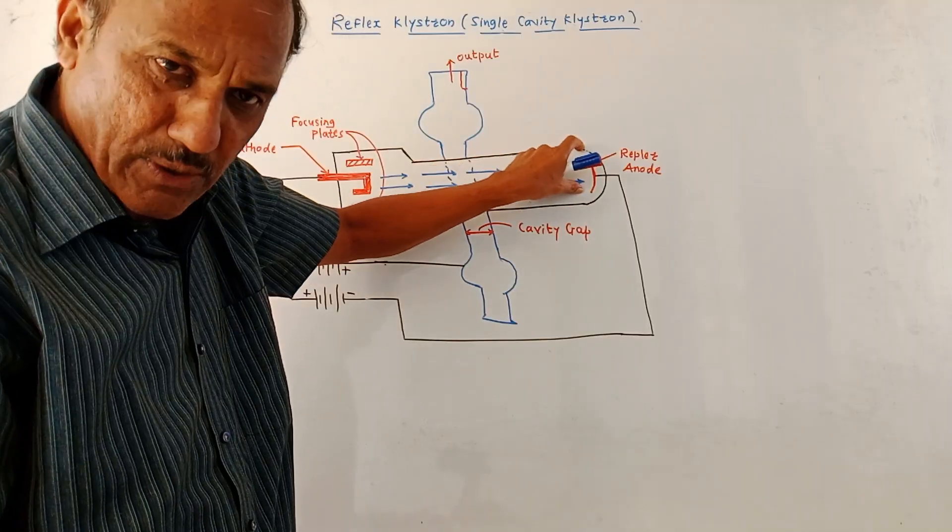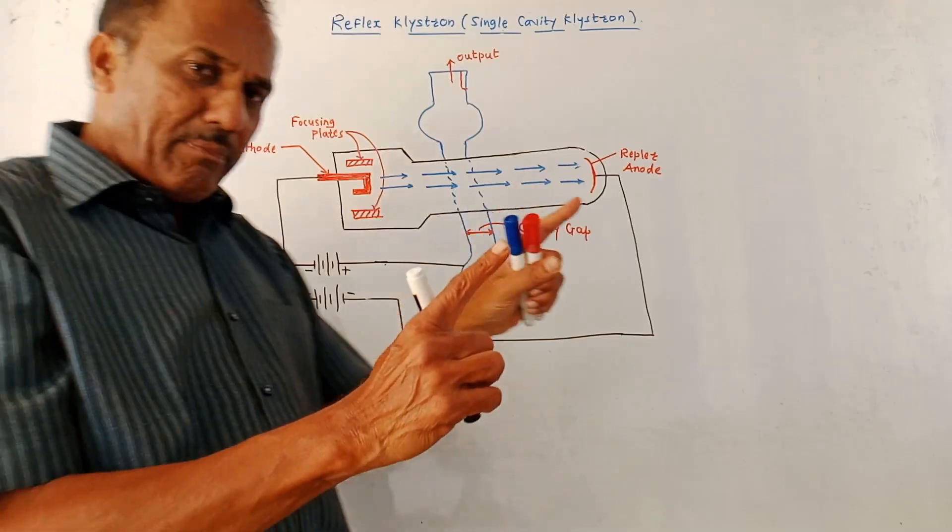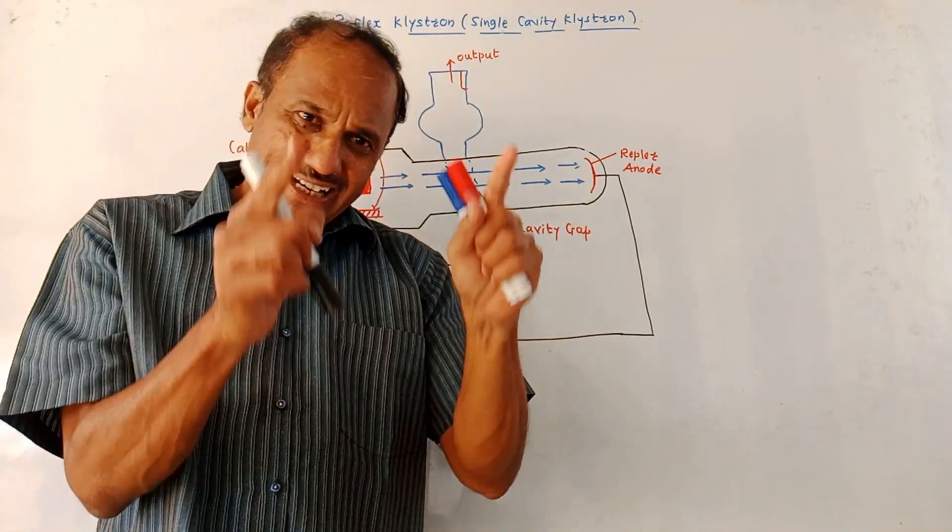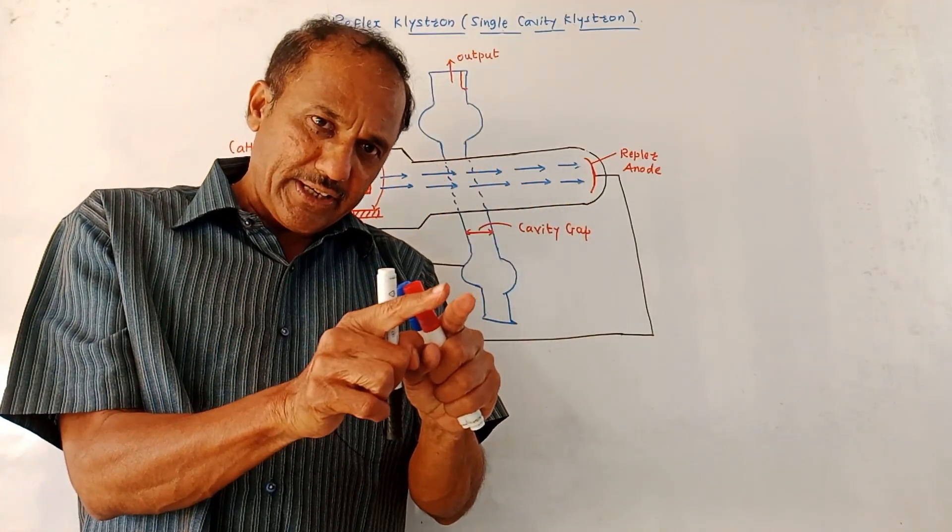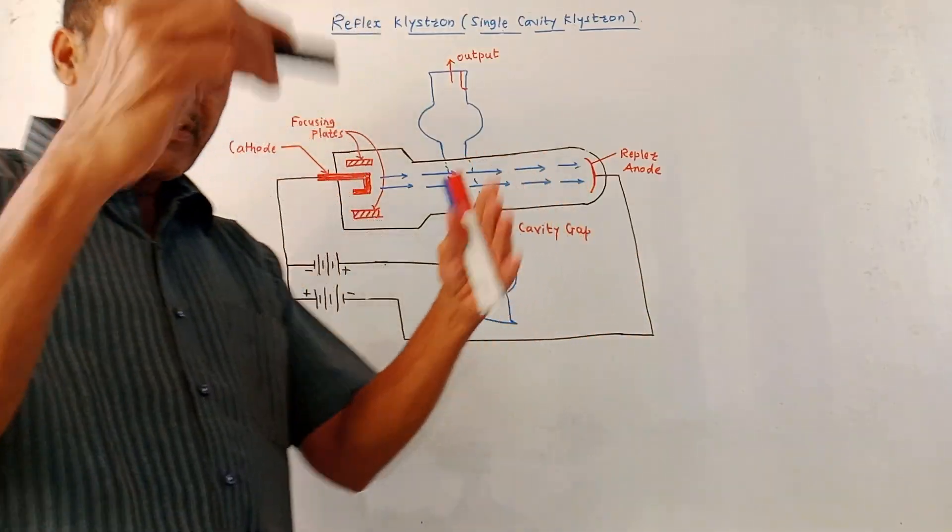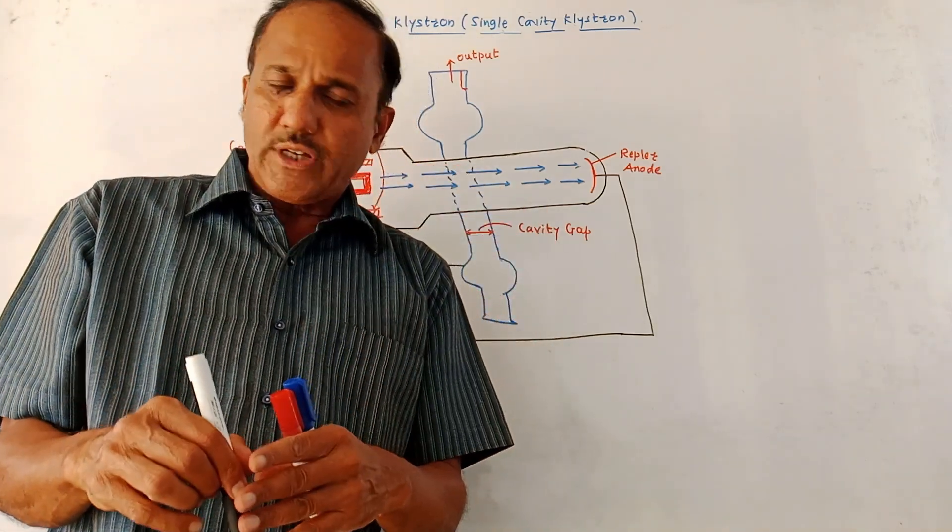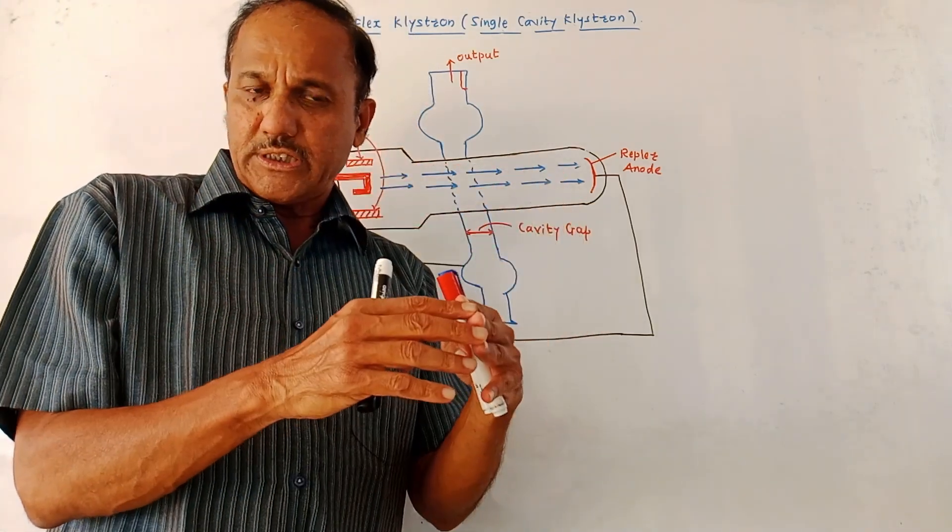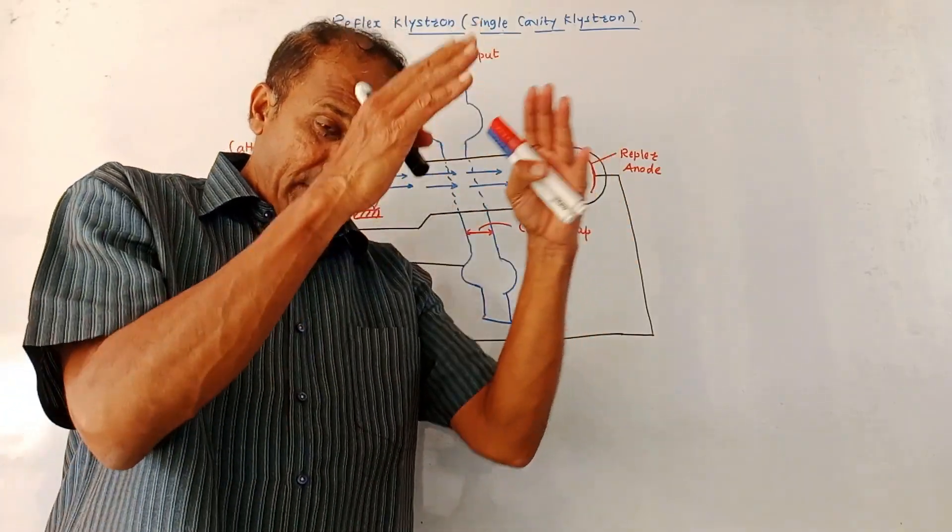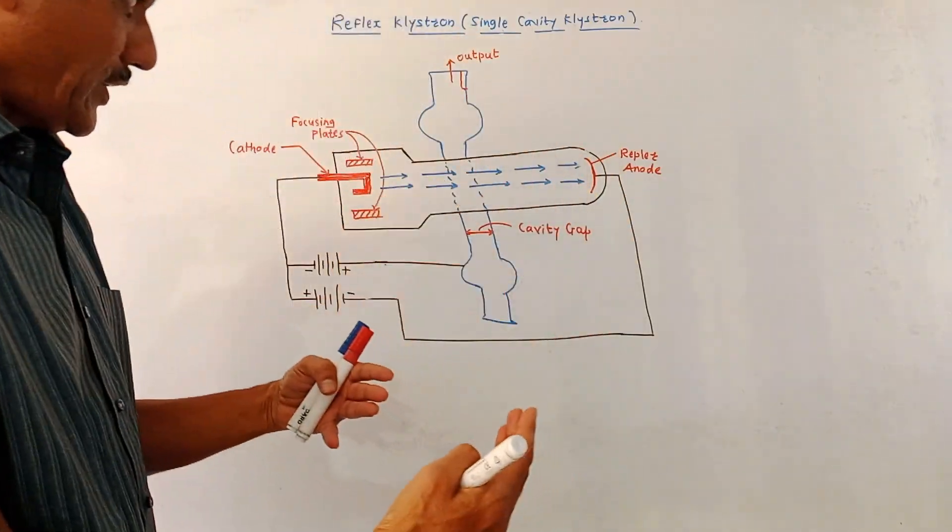Then again, these electrons will reach the repeller anode and will be reflected back. Remember, whenever electrons are entering the cavity and the cavity gap is slightly positive, acceleration will be provided. Another case: if the electrons are entering into the cavity when the cavity gap voltage is negative, in that case very less acceleration, rather retardation, will be provided to such electrons.